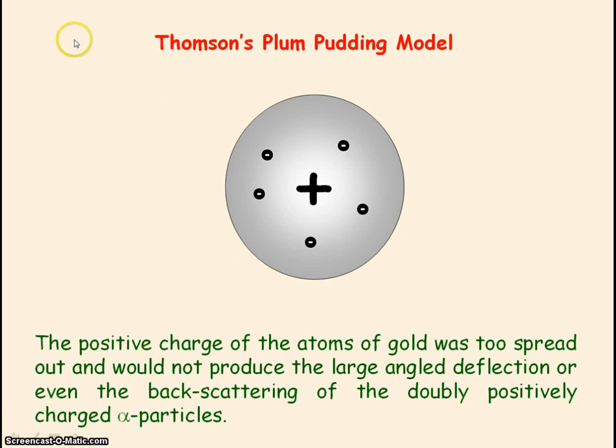Thomson's plum pudding model could not explain the large angle deflections or the back scattering of the alpha particles, because the positive charge of the gold atoms were too spread out to produce such large angle deflections.